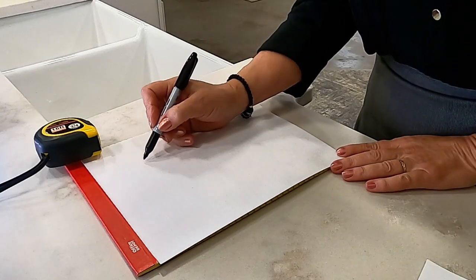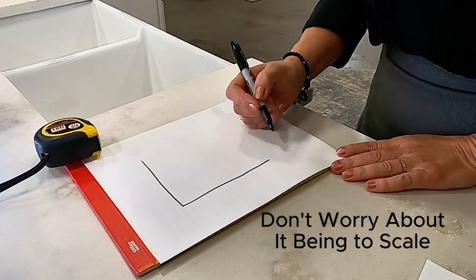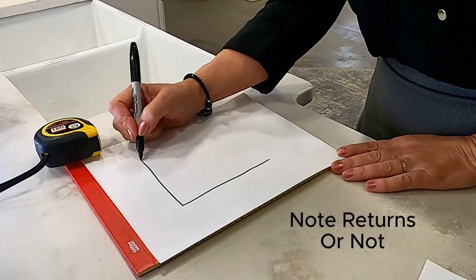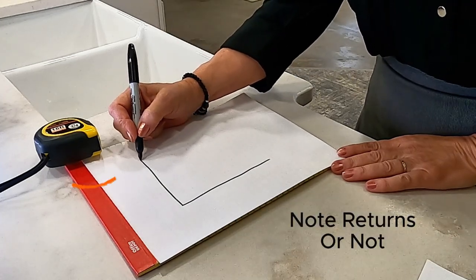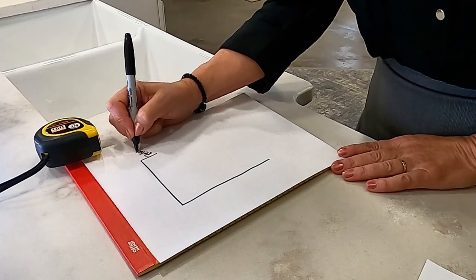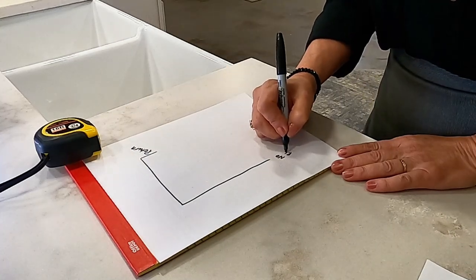When you are putting these measurements on paper, don't worry about it being to scale. If you have return walls at the ends, please write those in. Those are very important. Those will determine whether you need a filler or not at the end, so your drawers, when you're opening them, don't scrape against your walls.